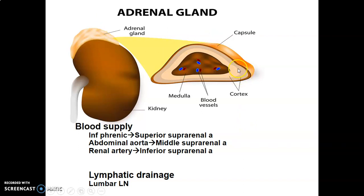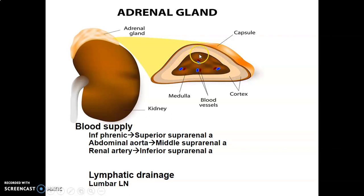You can appreciate that this is the cortex, and the cortex is usually divided histologically into three parts: the zona glomerulosa, zona fasciculata, and zona reticularis. You can see the different regions of the cortex here. Then you get to the medulla with the chromaffin cells and the neurovascular structures.